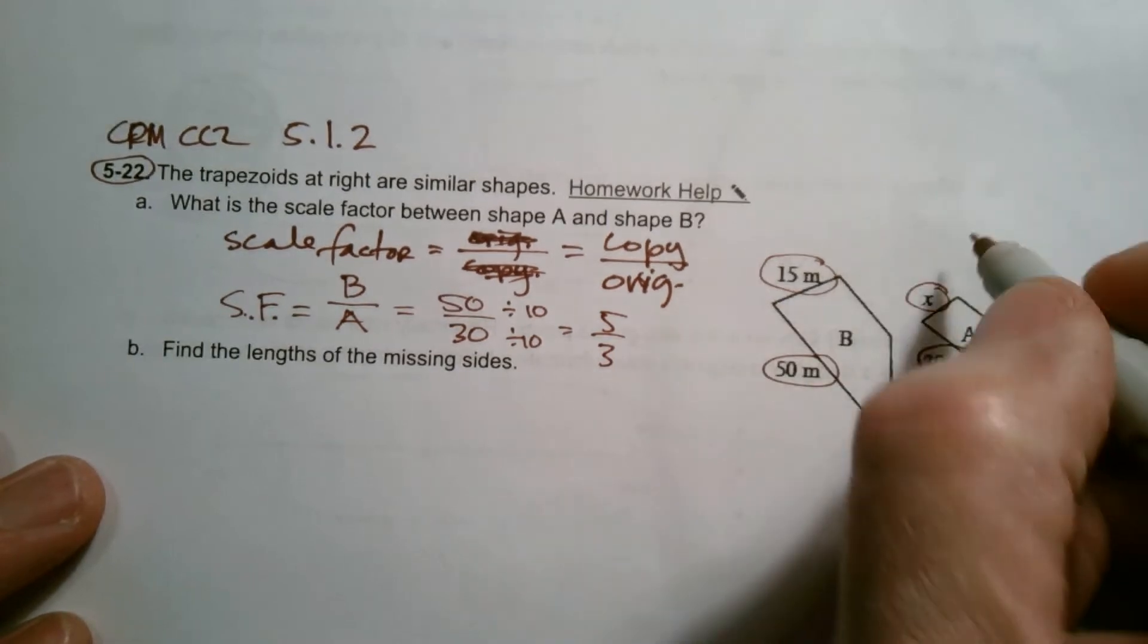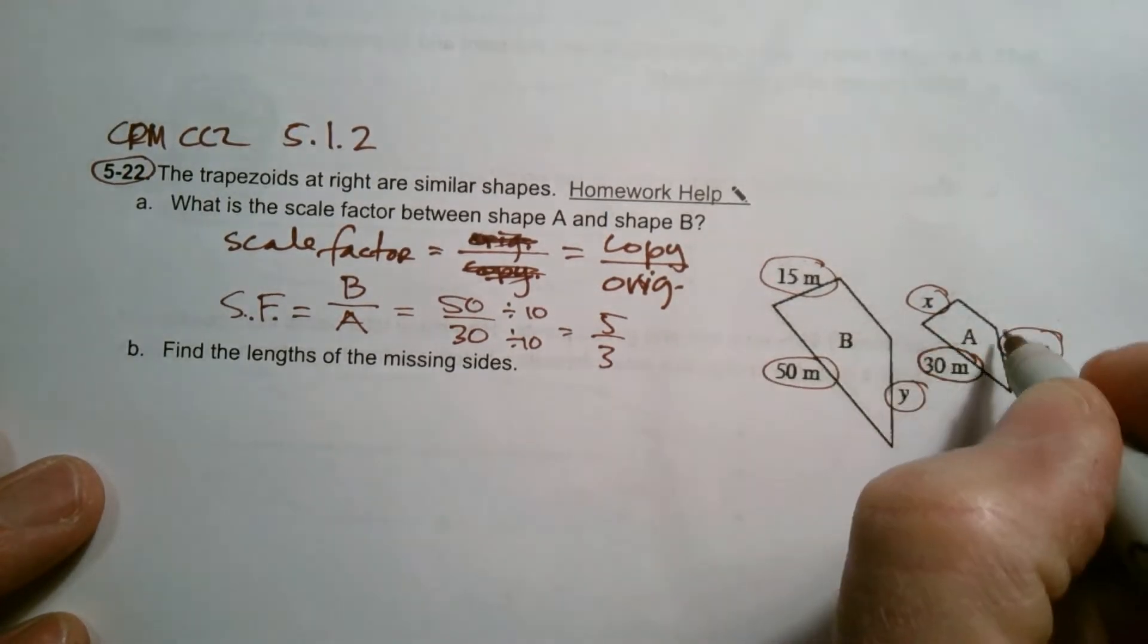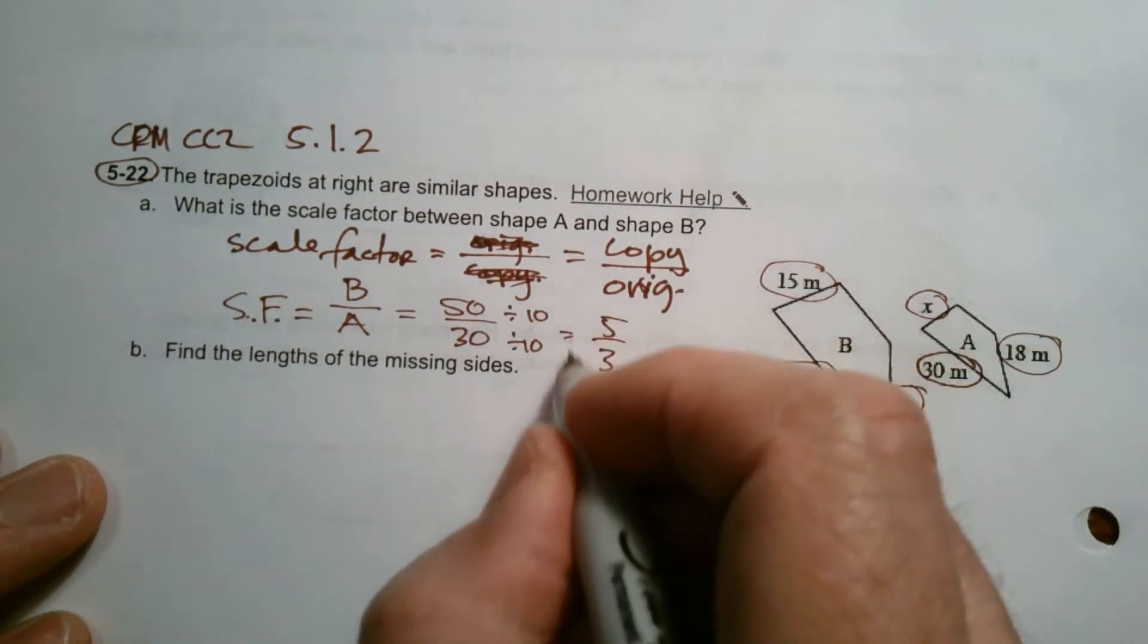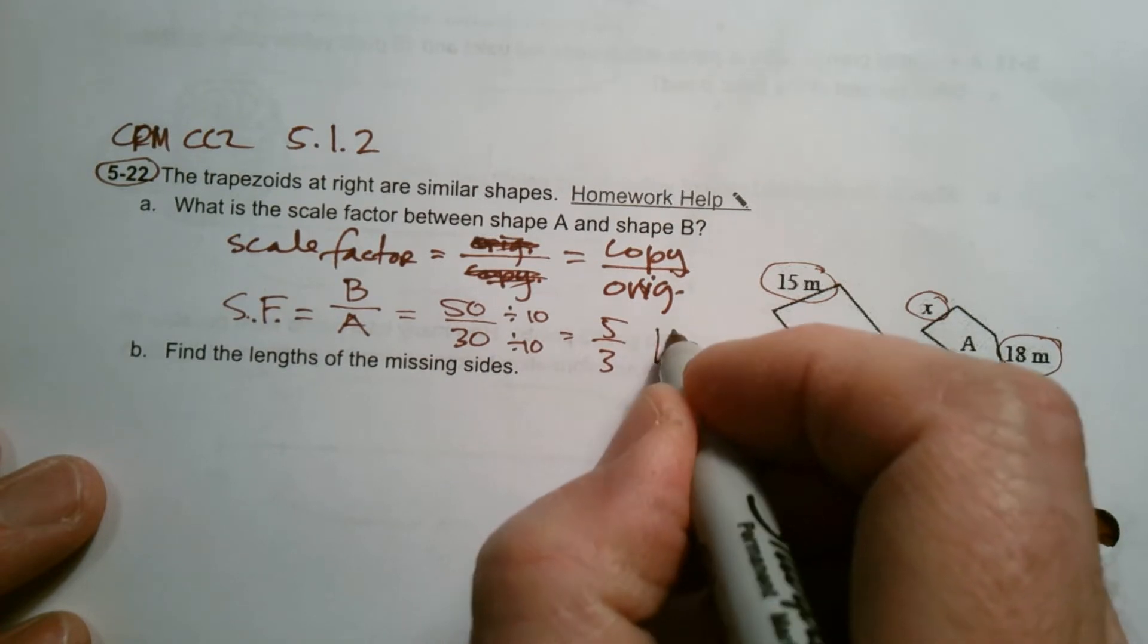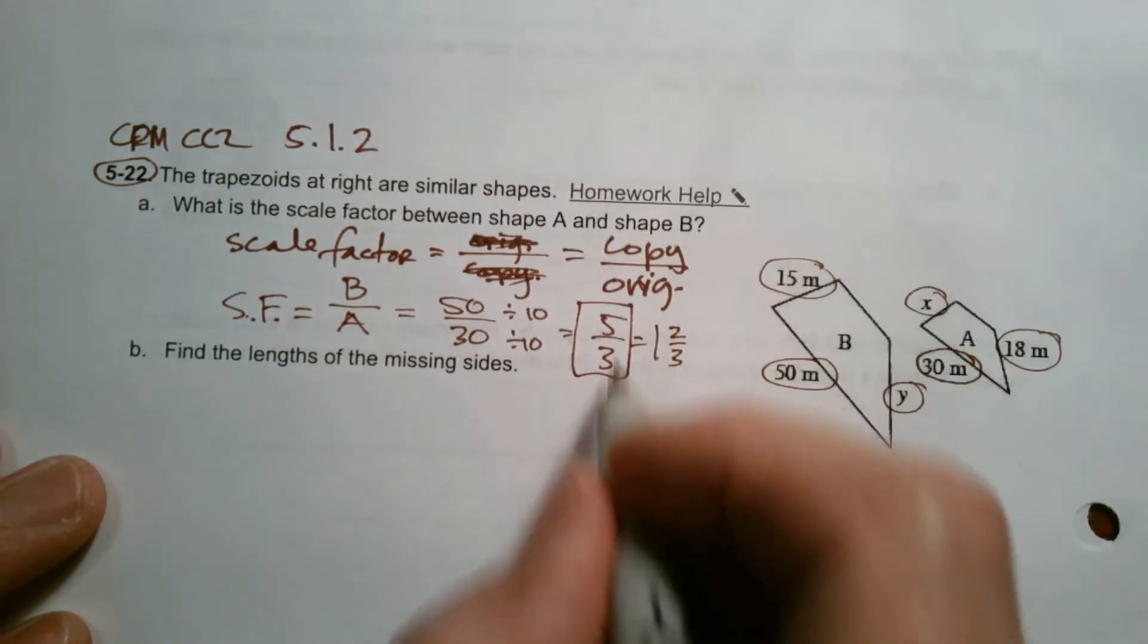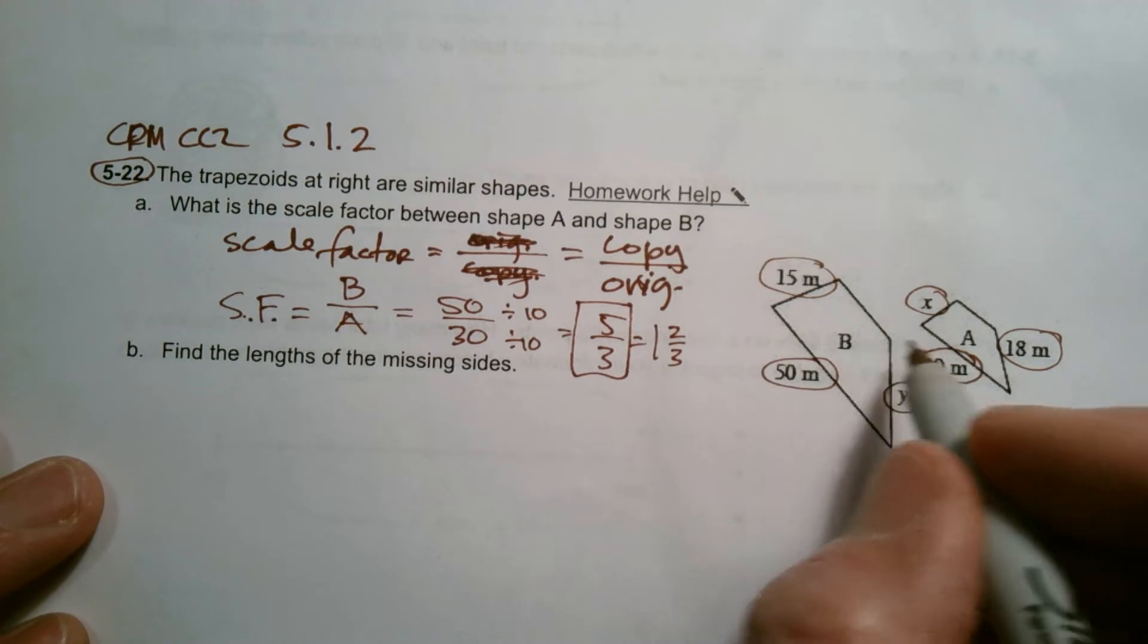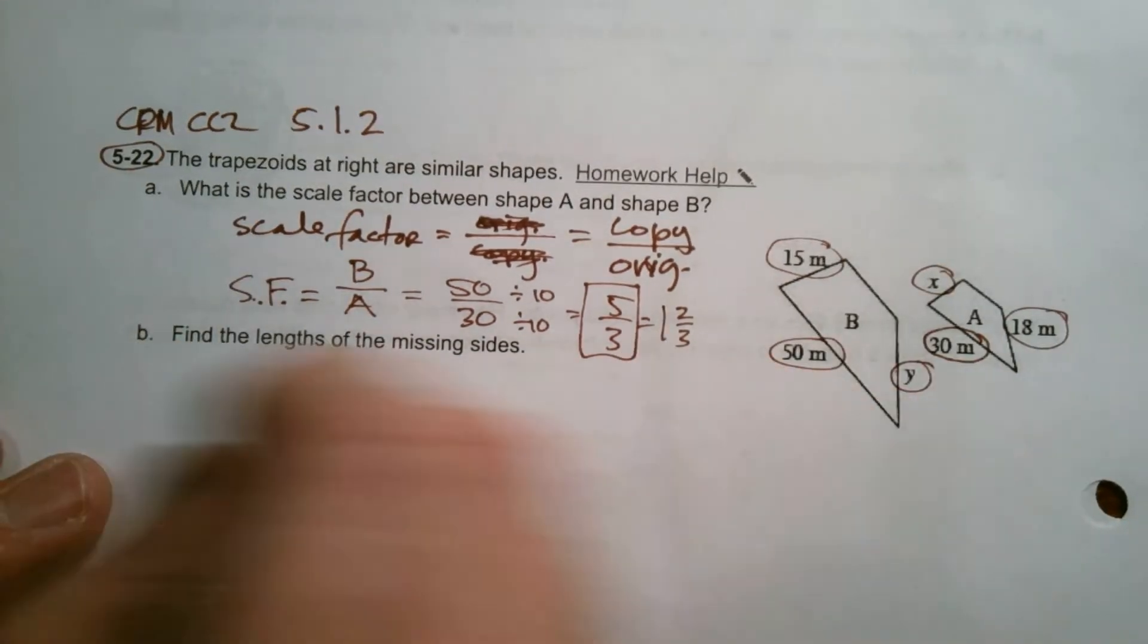So what is this saying? This is saying that if I was thinking about A to B, how did I grow from A to B? I multiplied each side by 5/3, or you could say one and two thirds if you wanted to, but 5/3 is a good enough response for us. B is one and two thirds larger than A. So now that's my scale factor.